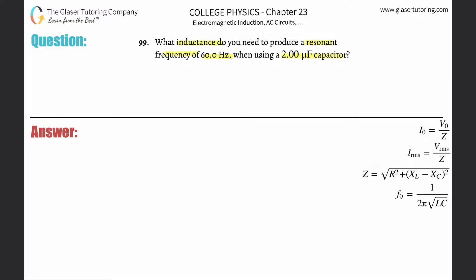So we need to use the formula for resonant frequency, and that formula is this: it's going to be equal to 1 over 2π multiplied by the square root of the inductance multiplied by the capacitance.